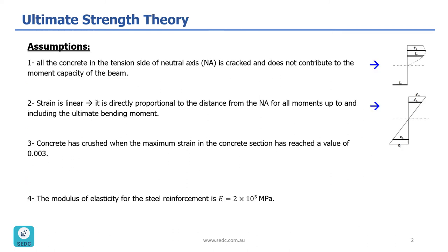In the ultimate strain theory or plastic analysis, we make a few assumptions. The first one is that all the concrete in the tension side of the neutral axis is cracked and does not contribute to the moment capacity of the beam. So we are basically saying all the concrete below the neutral axis does not exist.